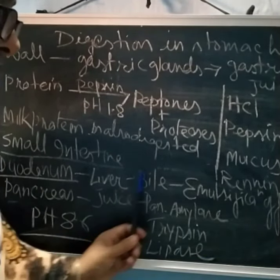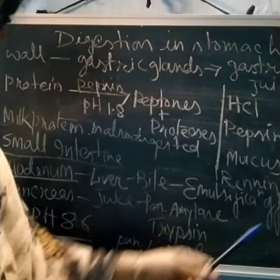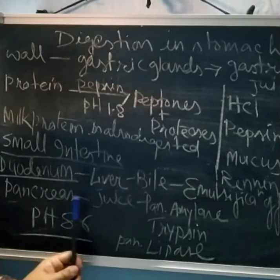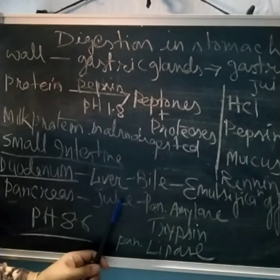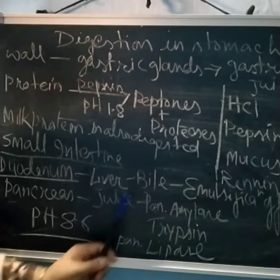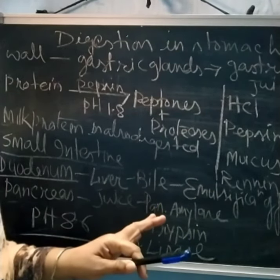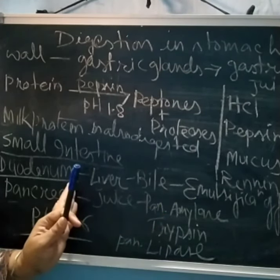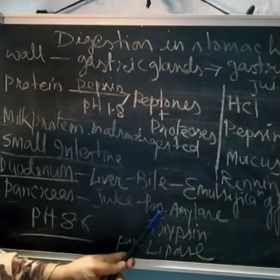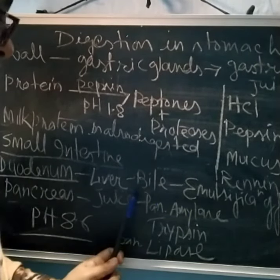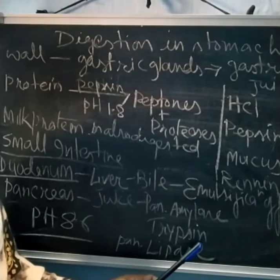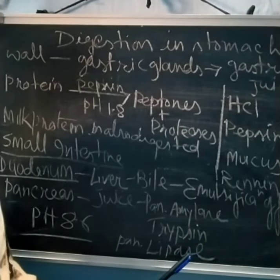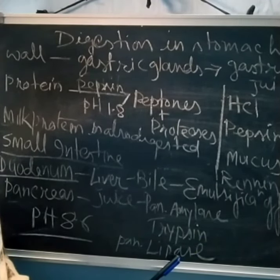Once the liver emulsifies the fat, the pancreas produces pancreatic juice, which comes through the pancreatic duct to the site of the duodenum. This pancreatic juice contains three things: pancreatic amylase, trypsin, and pancreatic lipase.